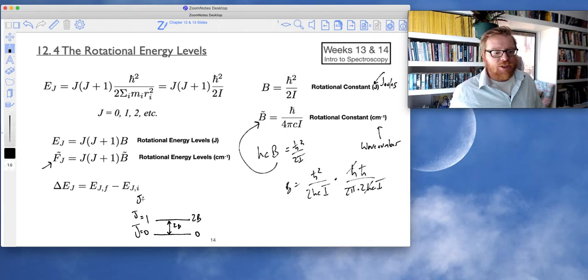And if I make j equal to 1, 1 plus 1 is 2 times 1 is 2. So that's 2 times b. And so the difference between these energy levels will be 2 times b. So now what about the j equals 2 level? Well, the j equals 2 level is 2 plus 1 is 3 times 2 is 6. So that's 6b. And the difference between these two energy levels is now 4b.